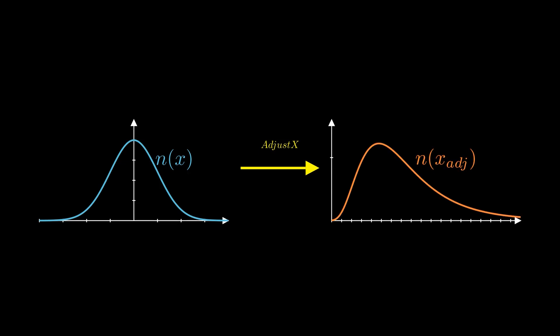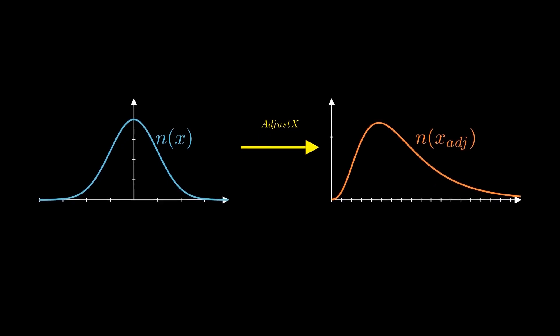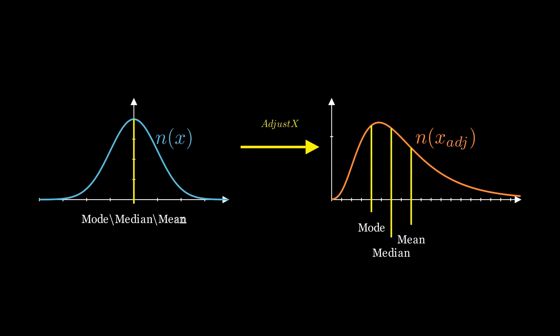Now, let's break down some important terms. The mode is the highest point of the distribution where most occurrences happen. The mean is the balance point where the total value is evenly split on both sides, and the median is the middle value where half the occurrences fall to the left and half to the right. In a perfect normal distribution these three points align, but in a log-normal distribution they're spread out — understanding these points helps us adjust from a log-normal to a normal framework.